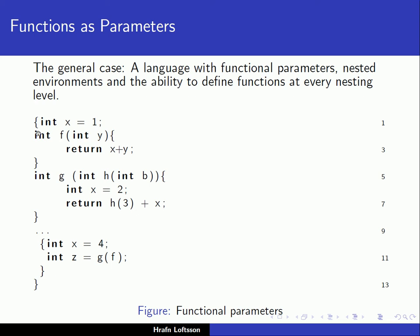Inside this main block, we have definitions of two functions. The first function is f and the second function is g. The first function has a formal parameter y of type int, and the function f returns an integer. In the body of its code, it simply does return x plus y.